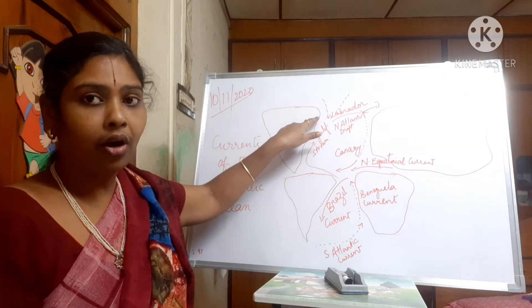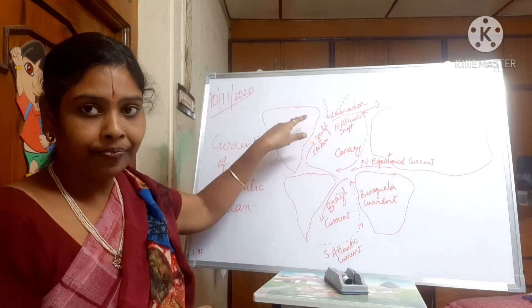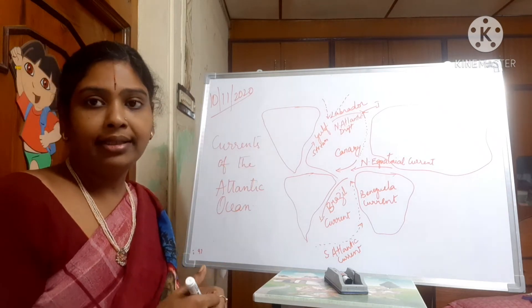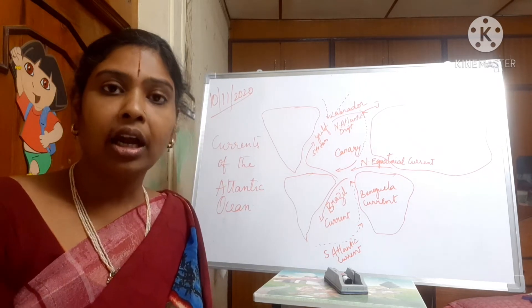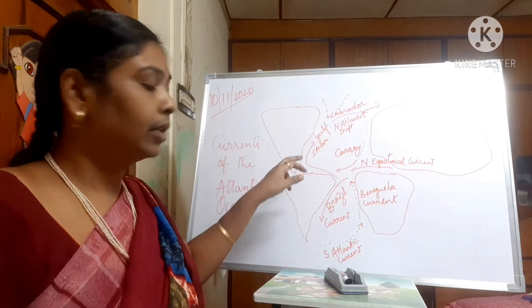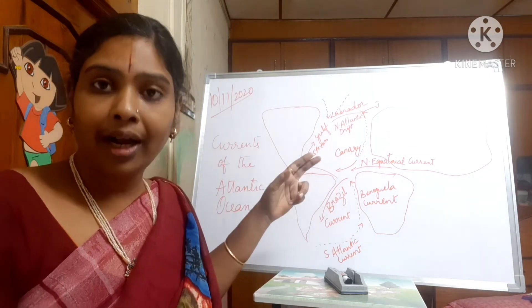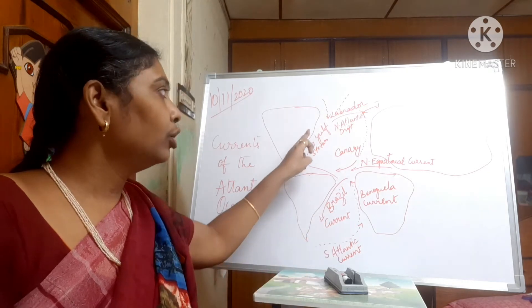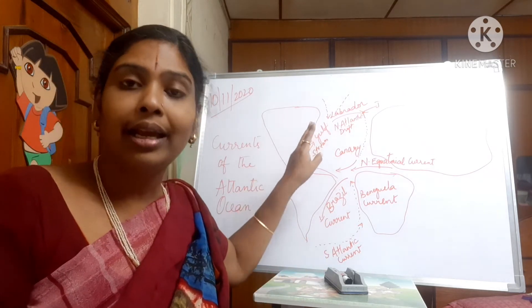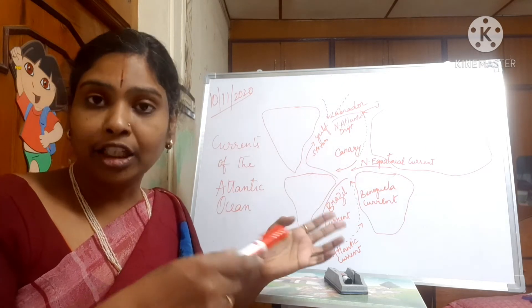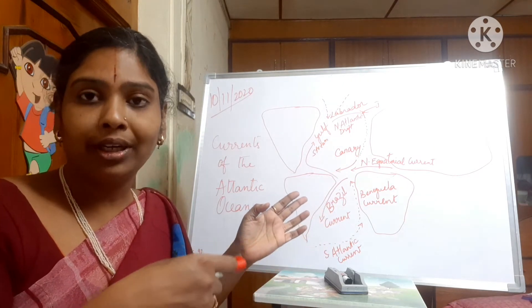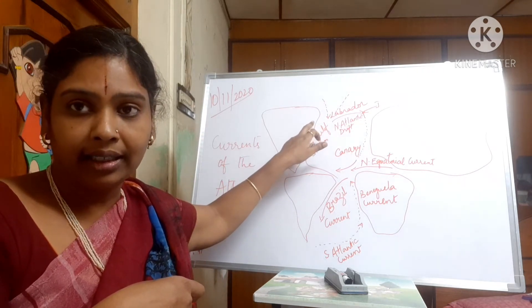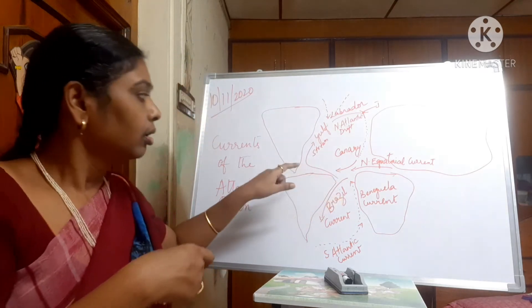The Gulf Stream mixes with the Labrador current, which is also coming from the poles, and this causes a lot of fog near Newfoundland — one of the major disasters happening near Newfoundland. When fog occurs, it is both an advantage and a disadvantage. Near Newfoundland it is a major disadvantage because people transporting cannot see the ships.